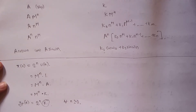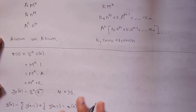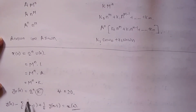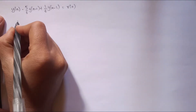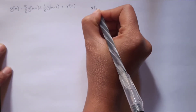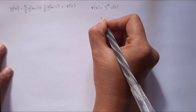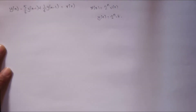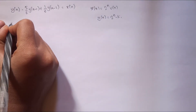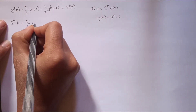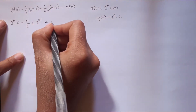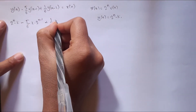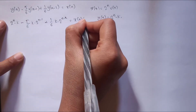To find k, we substitute y_p of n = k * 2^n back into the original given equation. Substituting, we get: k*2^n minus (5/6)*k*2^(n-1) plus (1/6)*k*2^(n-2) equals 2^n * u(n). We choose n = 1 so that u(n) = u(1) = 1 and no term vanishes.